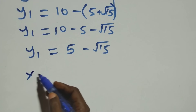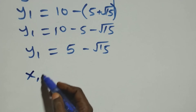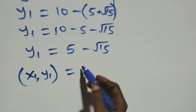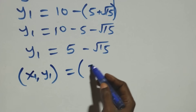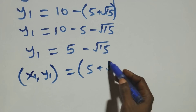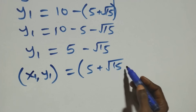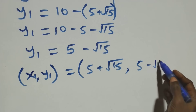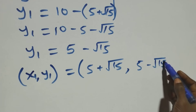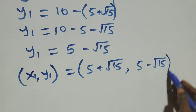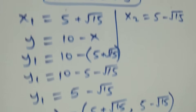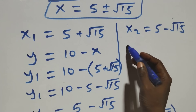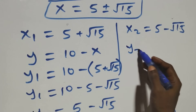The first set of solutions is: x₁, y₁ equals to (five plus root fifteen, five minus root fifteen).